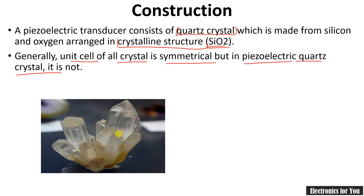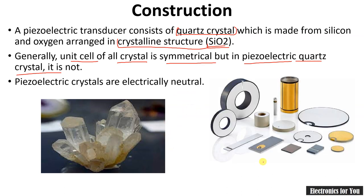Here we can have different types of piezoelectric shapes, just like this. Basically, this piezoelectric crystal is electrically neutral. So when no force is applied over the piezoelectric crystal, it is electrically neutral. But when some force is applied, then it produces an electrical signal as its output, and this piezoelectric crystal can be of different shapes and different sizes, as shown here.